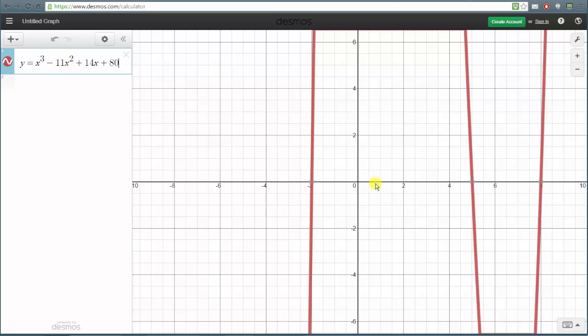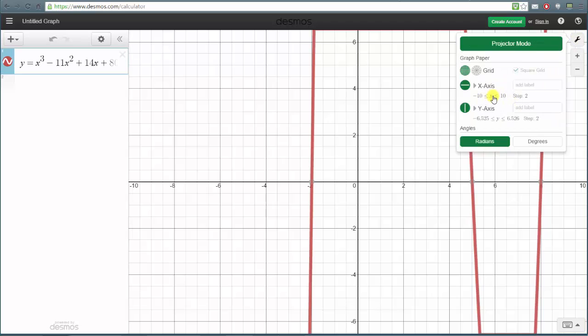Now we have the graph of the function but we need to adjust the window. There are two main ways to adjust the window: we can go back to the graph settings by clicking on the wrench and adjust the scaling on the x and y axes manually, or we can use the zoom out and zoom in buttons on the right. The plus is zoom in, the minus is zoom out. Let's zoom out before we adjust the axes manually.